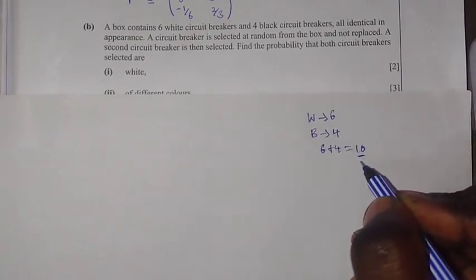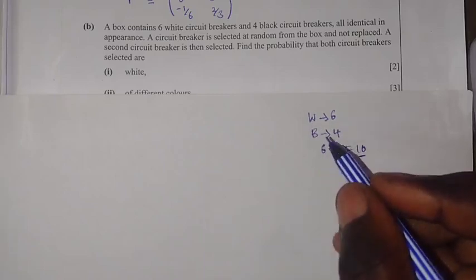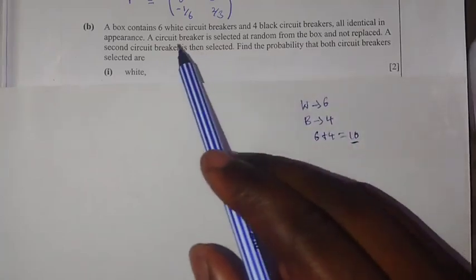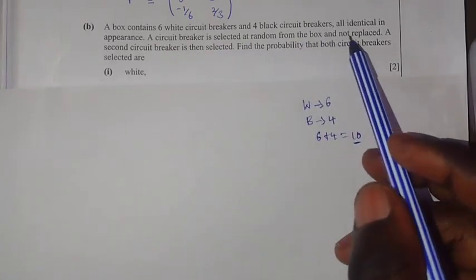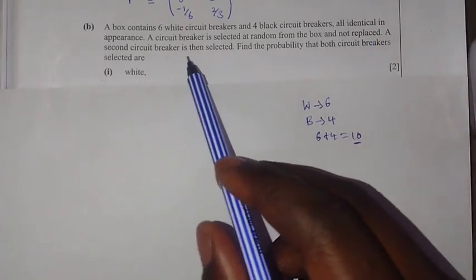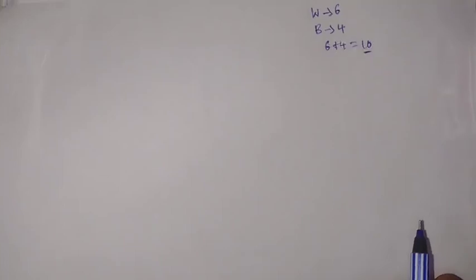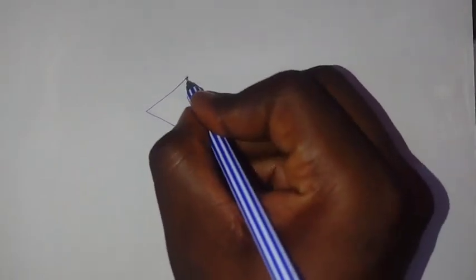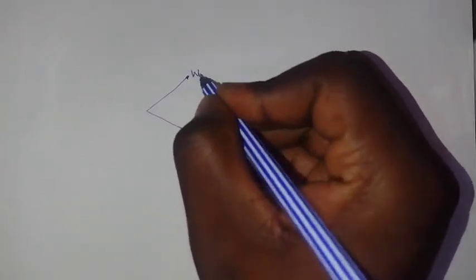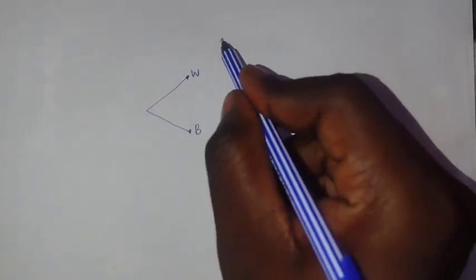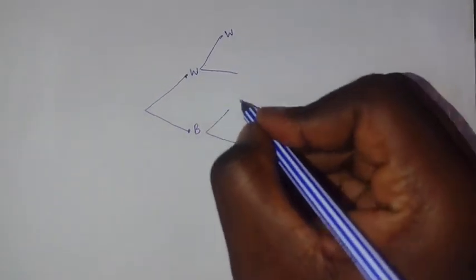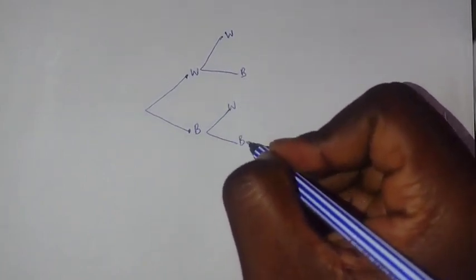So this 10 is the total number of both white and black circuit breakers. To draw the tree diagram, we are going to have two events because they say a circuit breaker is selected and not replaced, then a second is selected. We'll have white and black for the first event, and again white and black branching from each for the second event.